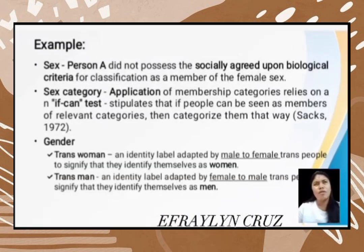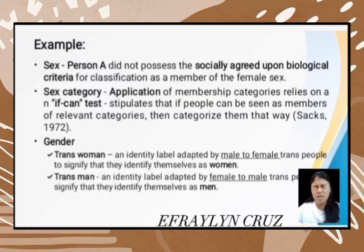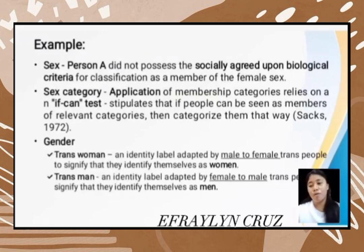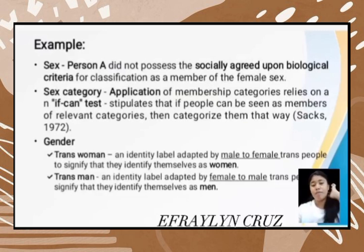For example, Person A is male but does not agree upon the biological criteria because he is gay, so he cannot be a member of the female sex category. For sex category, if a person passes the criteria as male or female, they are categorized accordingly.